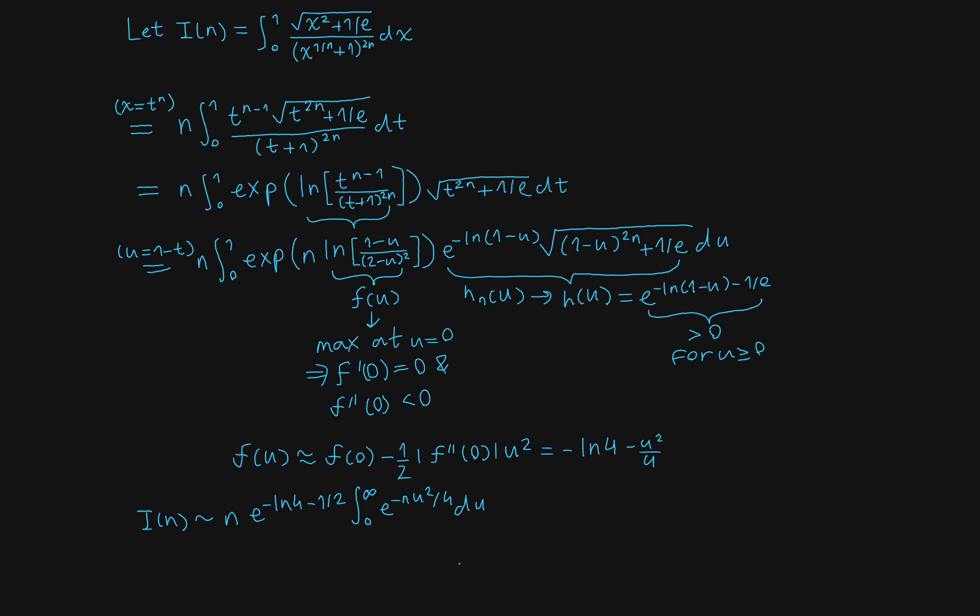So this is a standard Gaussian integral. You can just do a substitution like square root of n times u over 2. The usual one is going to be square root of pi over 2. And this is going to simplify to where you have, so we have the n from the front, the e to the minus ln of 4, and then the 1 half here, we're just going to simplify these as, so we have n times 4 divided by 4 to the n over square root of e, and then the Gaussian integral is square root of pi over n.